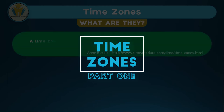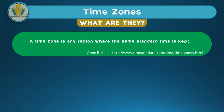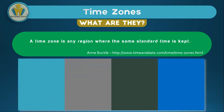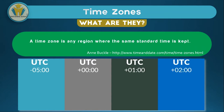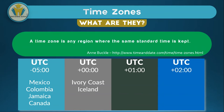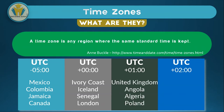What are time zones? Time zones are just regions where the same standard time is kept. For example, in this diagram the first column represents the time zone which is five hours behind the coordinated universal time. Places in this region include Mexico, Colombia, Jamaica, and Canada — these places will have the same time and are said to be in the same time zone. Another time zone shown has no increase compared to the coordinated universal time; this is the Greenwich Meridian time zone, where we have Ivory Coast, Iceland, Senegal, and London.